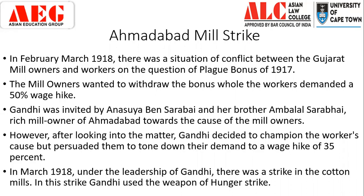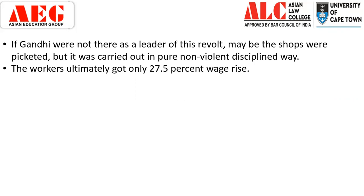In March 1918, under the leadership of Gandhi, there was a strike in the cotton mills. All cotton mills across Ahmedabad went on strike — workers refused to even open the gates of the mills. This led to a major confrontation and the police was called. The mill owners tried to forcefully open the mills and threatened that workers who did not enter would be thrown out and made unemployed. Gandhi then used the final measure — he went on hunger strike, declaring he would fast until death if the demands of the workers were not fulfilled. The mill owners, not wanting Gandhi to die and cause greater unrest, agreed to negotiate.